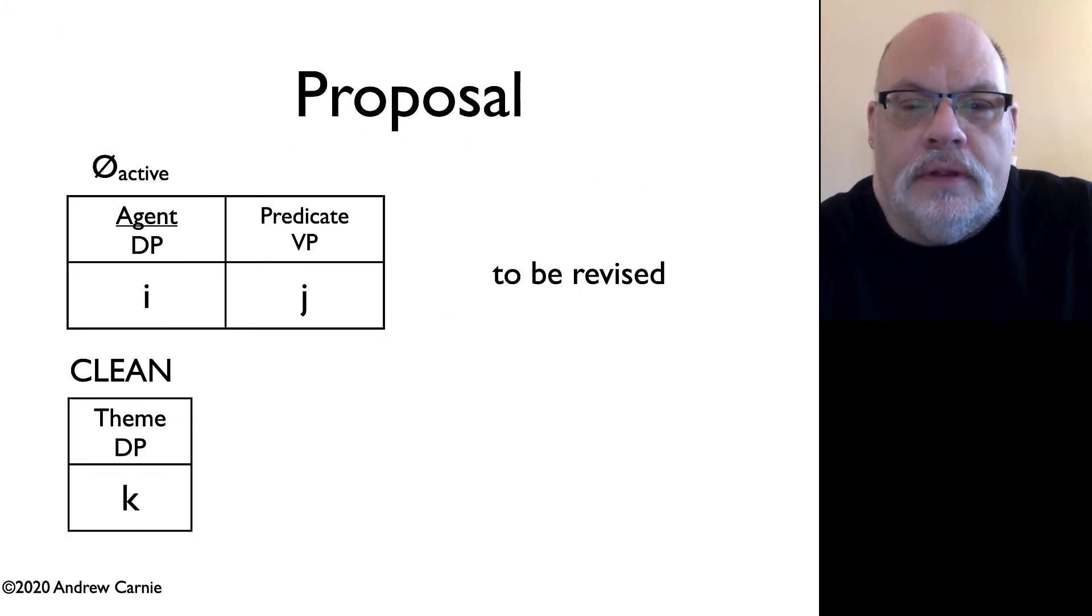So, what this would look like in terms of theta grids is that you have this null voice head, and this voice head takes an agent DP as its specifier, and it takes a predicate indicated by that underline, and then it takes a verb phrase or a sort of categorial element as its predicate, that's the predicate rule, and puts that in its complement position. And then the verb itself only introduces the theme, and it does so as a complement. There's no underline here. There's some revision to be done on this, but this is a good first start.